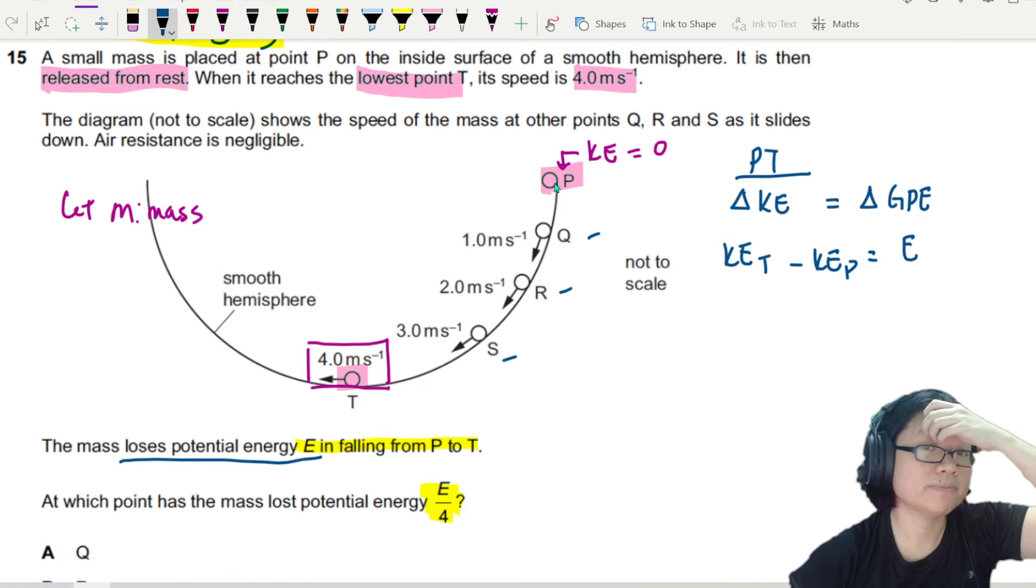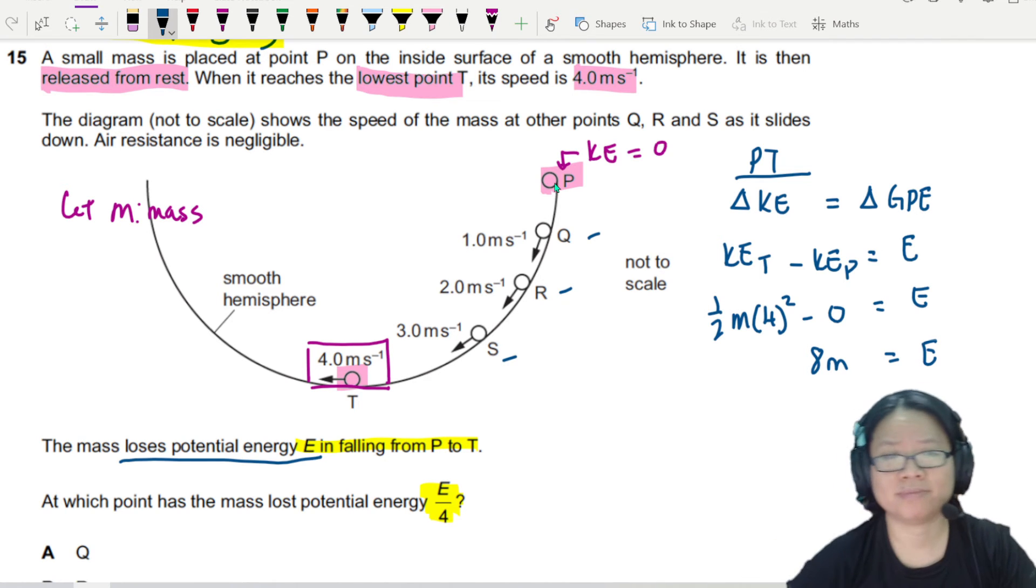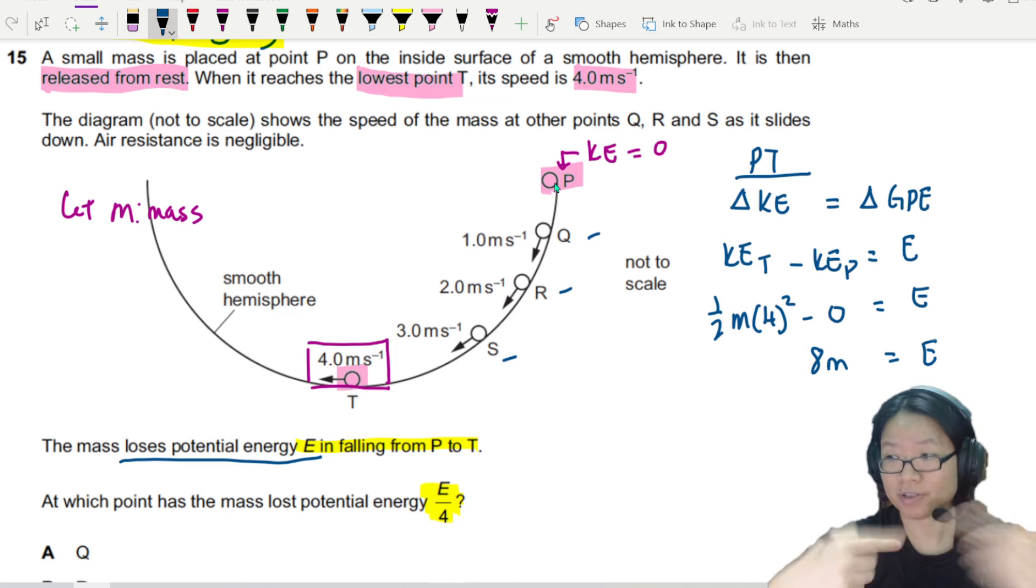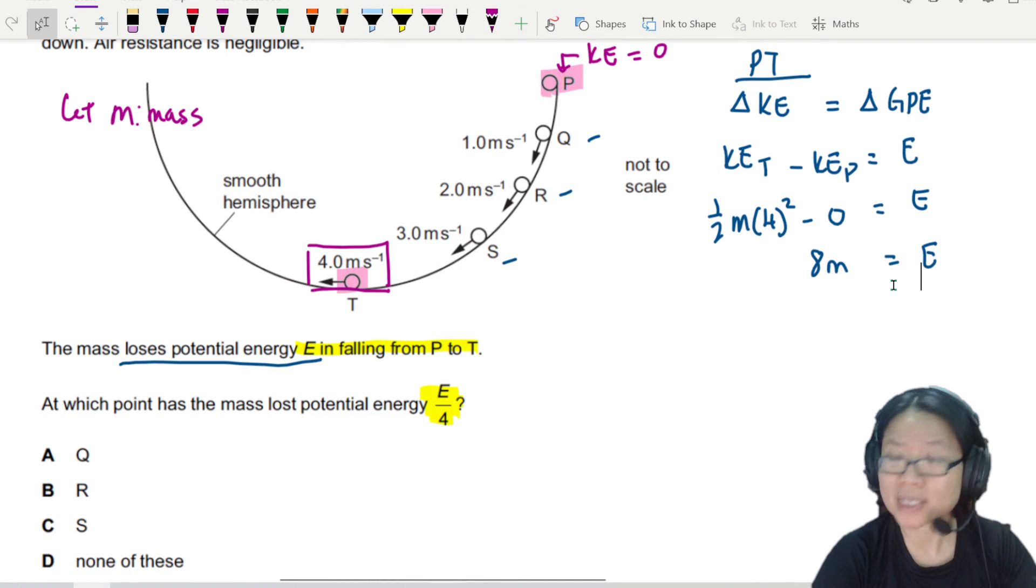Thankfully, P is 0. No kinetic energy. This is half m times 4 squared. Because the speed at T is 4. And this is equal to E. So from here, I can see that 8m is equal to E. You say, we don't have m. Doesn't matter. Because I can reverse and find it. Let me show you what I mean. Just leave it here first. You know E is 8m.